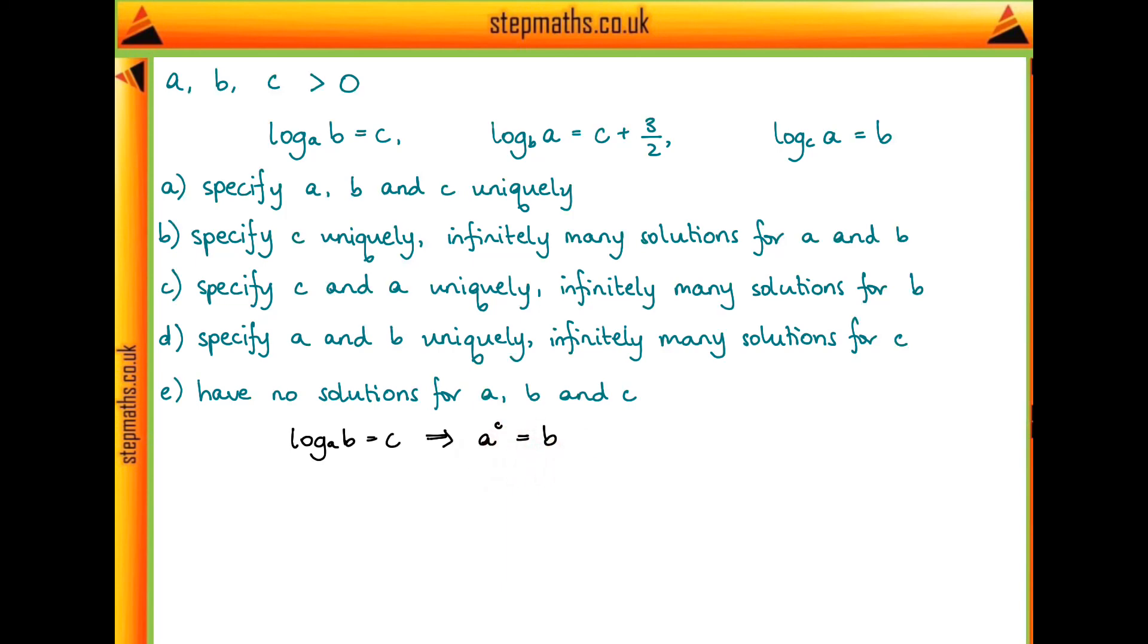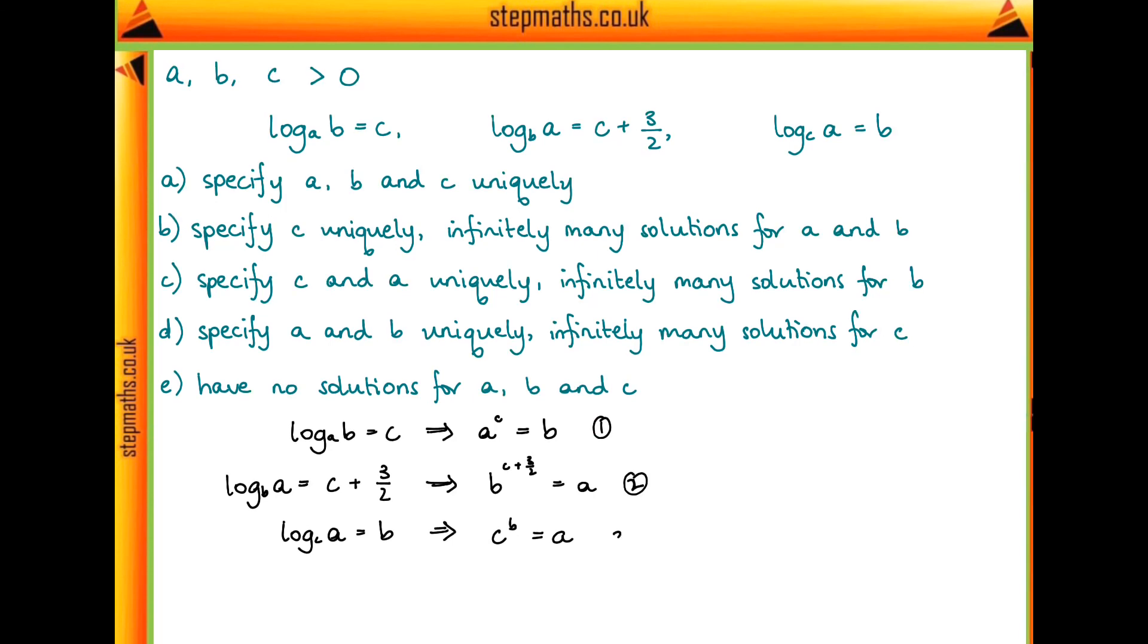We can do the same thing for these two other equations. They will tell us that b to the power of c plus 3 over 2 is equal to a, and that c to the power of b is also equal to a. So we basically have three simultaneous equations. I'm going to label these as equations 1, 2, and 3.